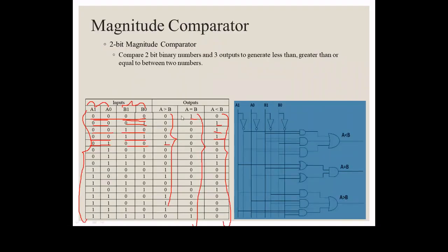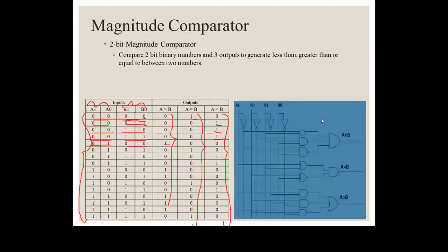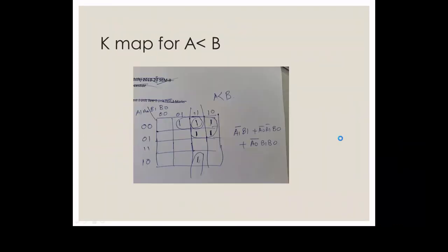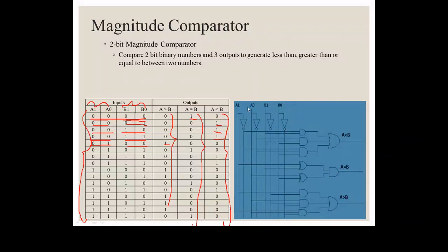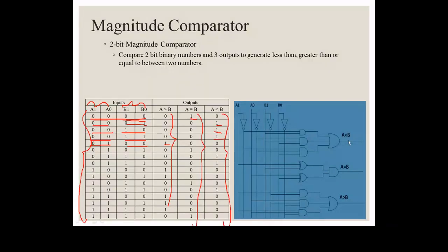Taking values for the A less than B column, the grouping on the K-map gives the Boolean function: A1̄·B1 + Ā0·Ā1·B0 + Ā0·B1·B0. This equation is implemented in the circuit for A less than B, with inputs A0, A1, B0, B1, and NOT gates used for complement purposes. Similarly, the K-map for A greater than B can be drawn, and the Boolean equation for A equal to B can be designed.